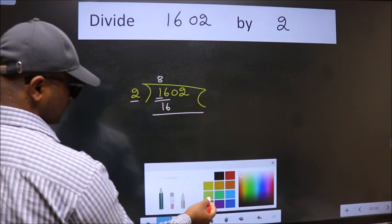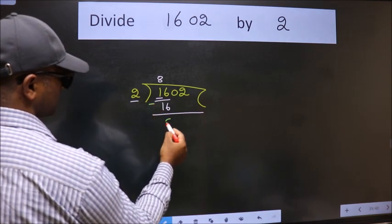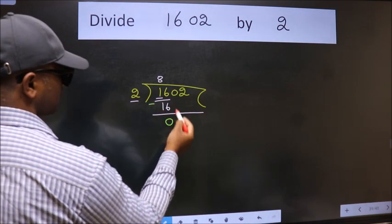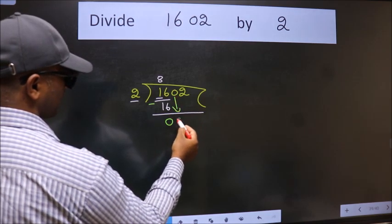Now we should subtract. We get 0. After this, bring down the beside number. So 0 down.